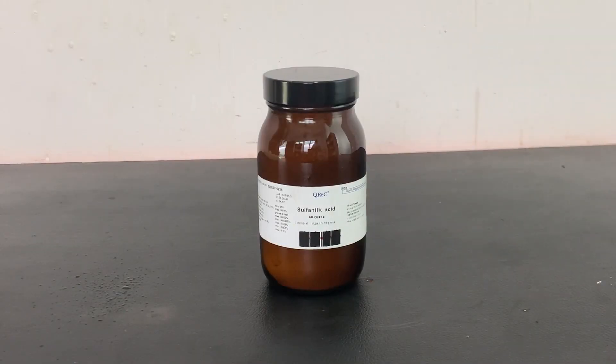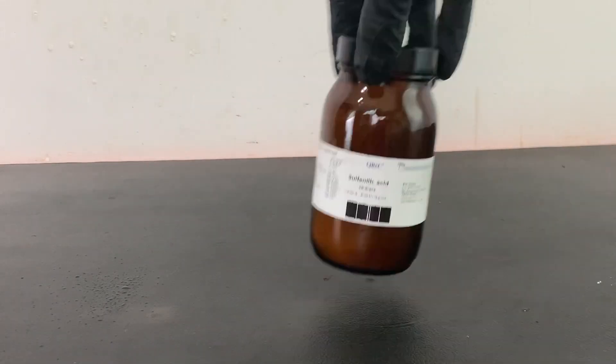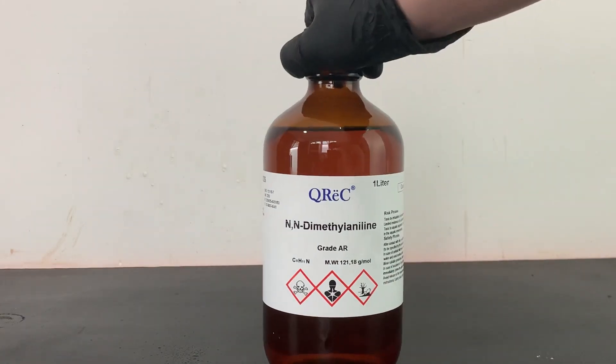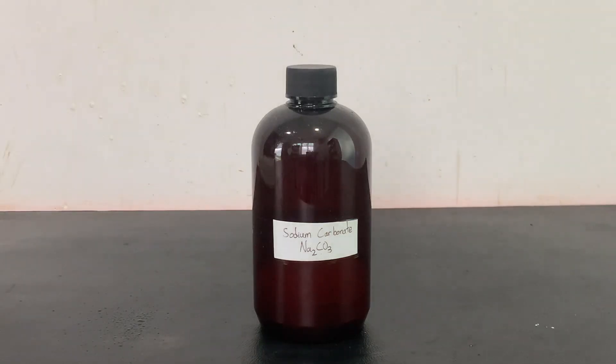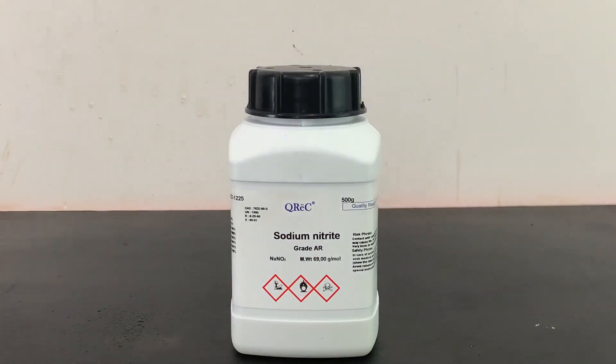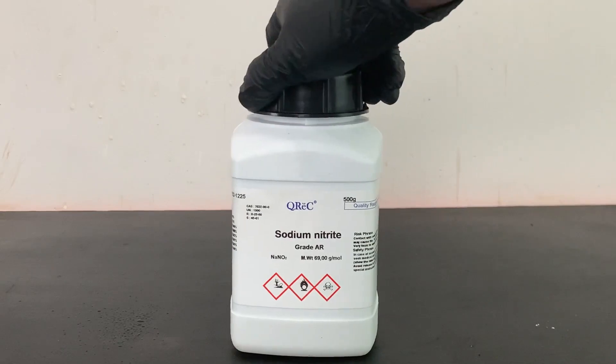To make the methyl orange, I used 3.6 grams of sulfonylic acid, 2.8 milliliters of NN-dimethylaniline, 1.2 grams of sodium carbonate, and 1.5 grams of sodium nitrite.